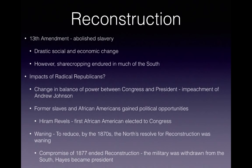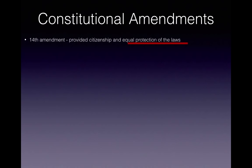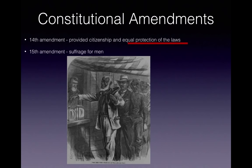The Compromise of 1877 ended Reconstruction. The military was withdrawn from the South and Rutherford B. Hayes became president. The 14th Amendment provided citizenship and equal protection of the laws — a very key part of this amendment. The 15th Amendment granted suffrage for men, aimed specifically at African Americans, so all men were able to vote.